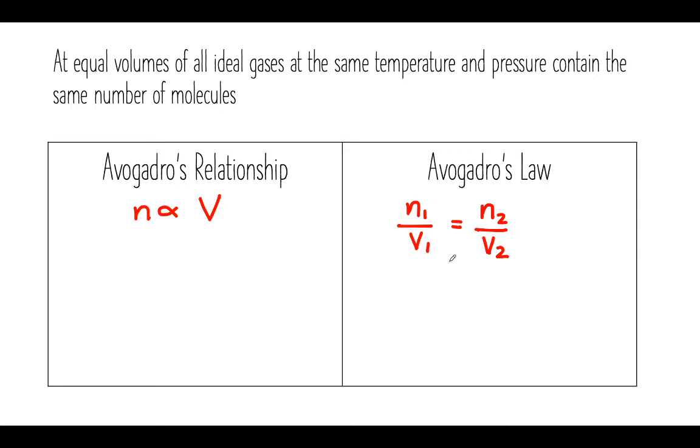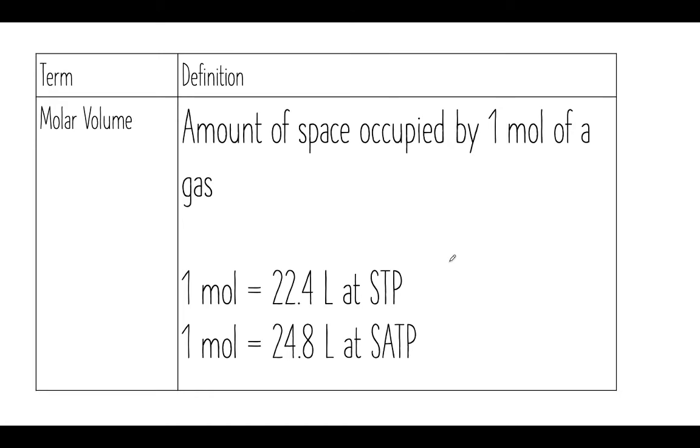According to Avogadro's law, we also have something called molar volume. So molar volume speaks of the amount of space occupied by one mole of a gas. And this again has to be at a specific temperature and pressure. So at standard temperature and pressure, one mole of an ideal gas contains 22.4 liters. And that's always going to be true, regardless of the gas that we're looking at.